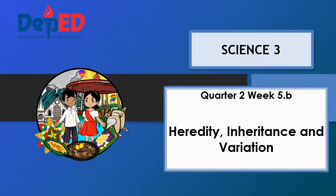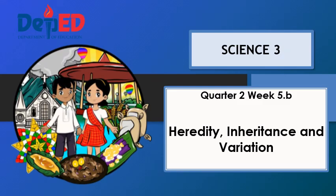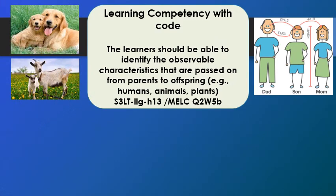Science 3, Quarter 2, Week 5: Heredity, Inheritance, and Variation. This is our lesson for today. Learning competency: The learners should be able to identify the observable characteristics that are passed on from parents to offspring.